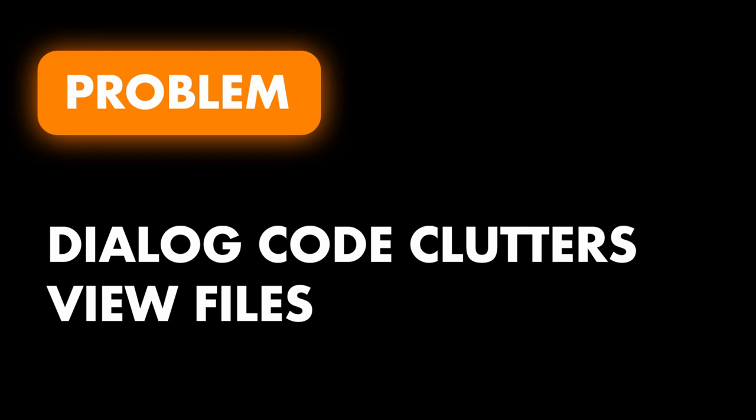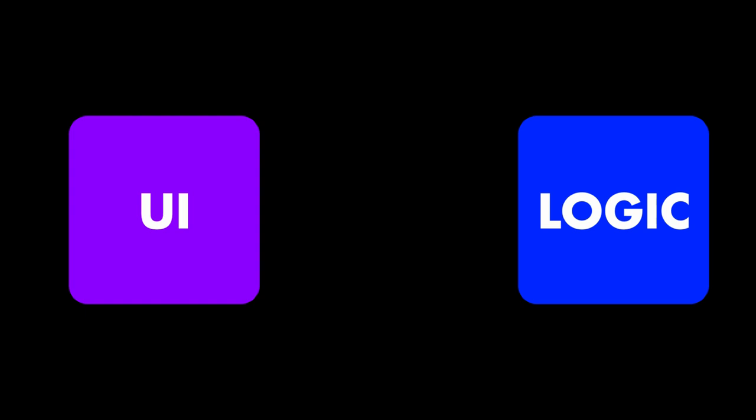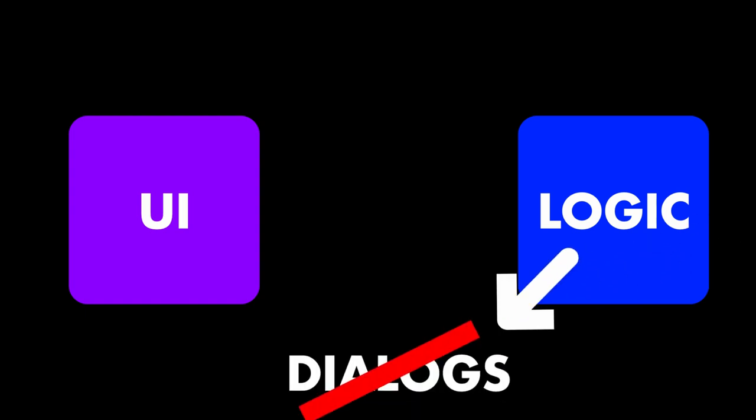The code itself doesn't have to be inside the view but it still usually is called from within your view file. This means that if you have any kind of separation between your business logic and your UI files, you can't use dialogs in your business logic. Since most dialogs are probably shown not on user interaction but on the result of a user action, they are probably tightly coupled to your business logic.